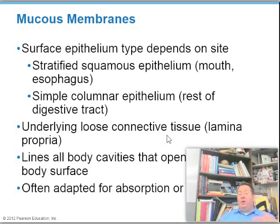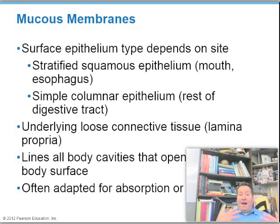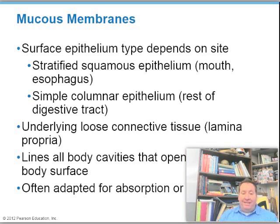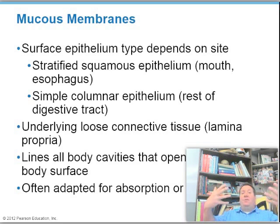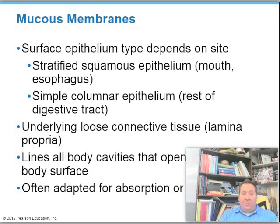The next membrane is a mucous membrane. Because it has the word mucous in it, we know it has absorption or secretion properties. It's an epithelial membrane. Depending on its location, it's composed of stratified squamous epithelial — like the mouth and esophagus — or simple columnar epithelial in the rest of the digestive tract. Beneath that epithelial layer is a connective tissue called the lamina propria.